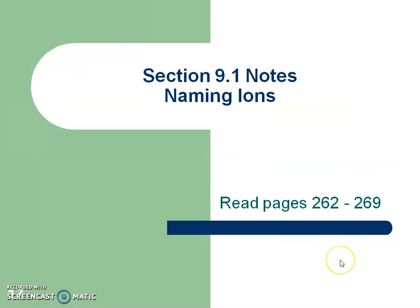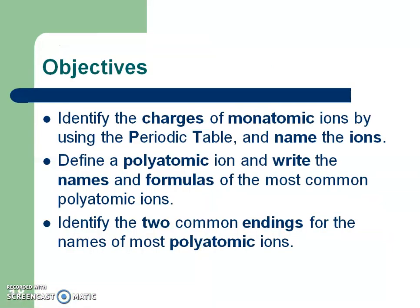Now let's look at your notes. Get out that packet of notes if you didn't already do so — we're going to do some naming of ions. In this section, you'll be able to identify the charges of monatomic ions — mono meaning one — using the periodic table and name those ions. We're also going to talk about polyatomic ions and how to write their names and formulas of the common ones, and you're going to identify two common endings for those polyatomic ions.